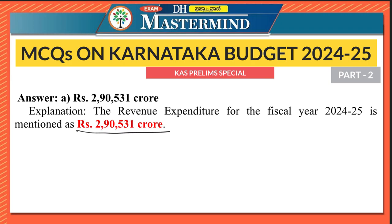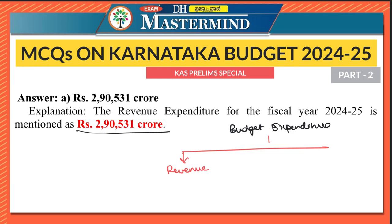Just like receipts have capital receipts and revenue receipts, budget expenditure also has two kinds: the first is revenue expenditure and the second is capital expenditure. According to the budget, the revenue expenditure is 2,90,531 crore.